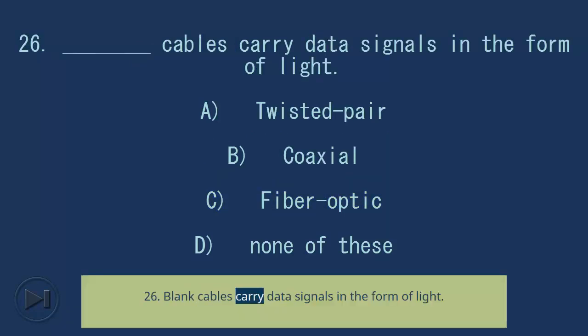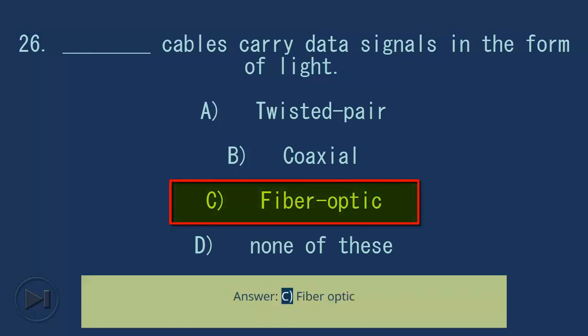Question 26: Blank cables carry data signals in the form of light. A) twisted pair, B) coaxial, C) fiber optic, D) none of these. Answer: C, fiber optic.